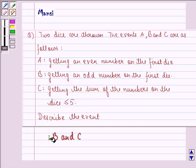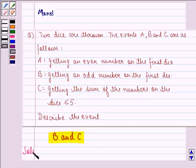Now describe the event B and C. So let us start with the solution. First of all, we write down the sample space for the event B and sample space for the event C.